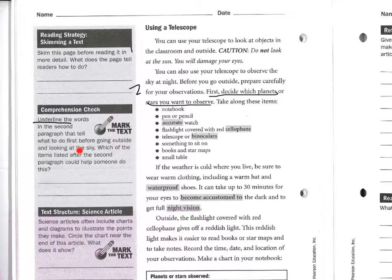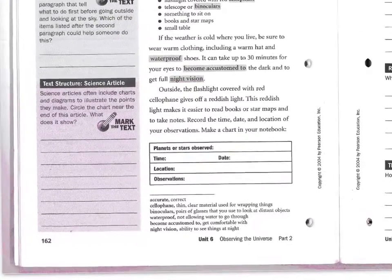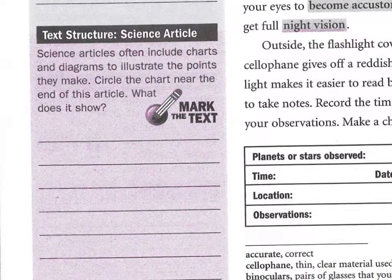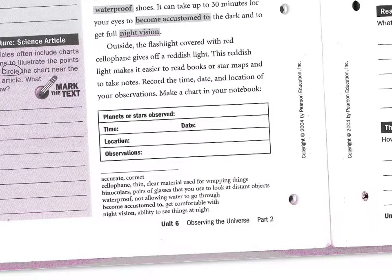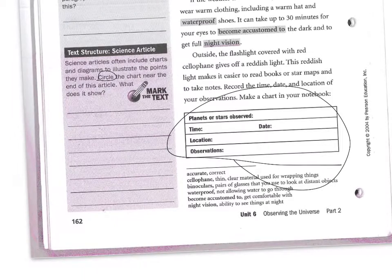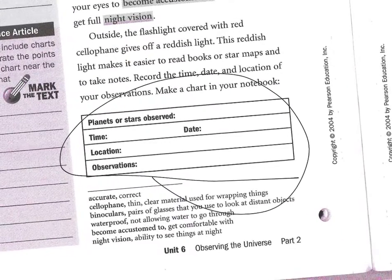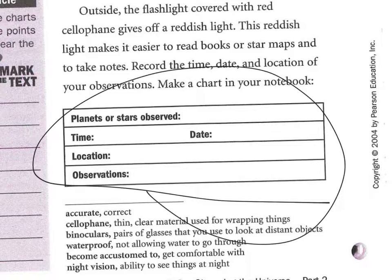Which of the items listed after the second paragraph could help someone do this? What would help you decide what planet or star you want to look at? Write that here. Science articles often include charts and diagrams to illustrate the points they make. Circle the chart near the end of this article — you're being asked to circle. Where's the chart? The rest of the question is: what does it show?